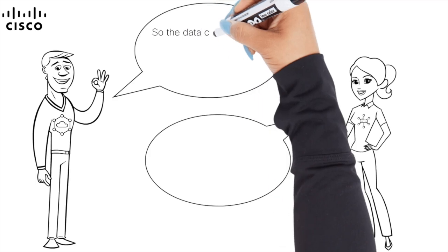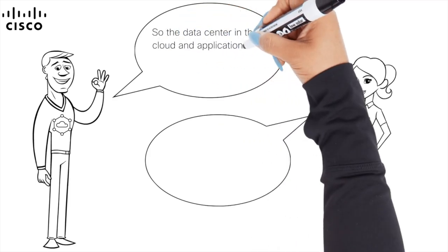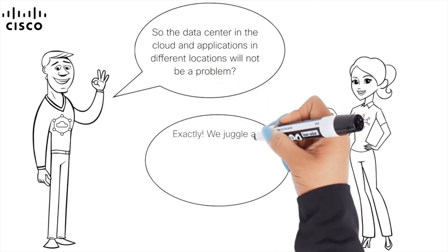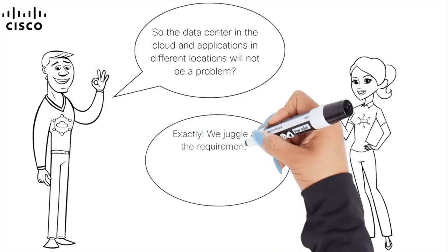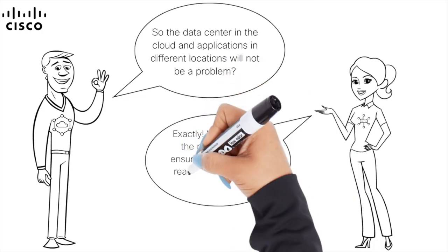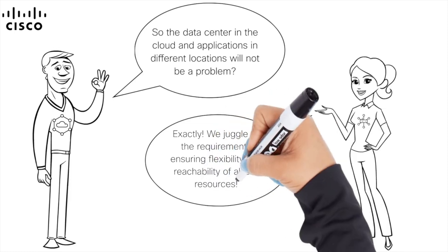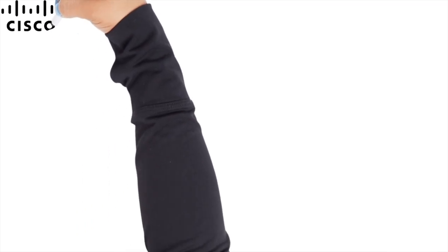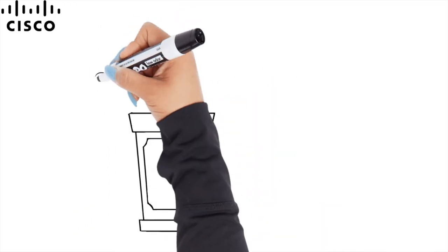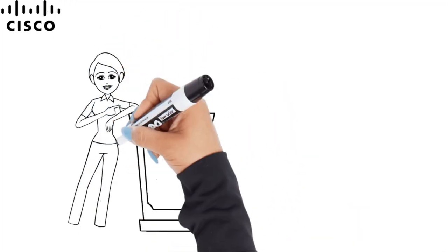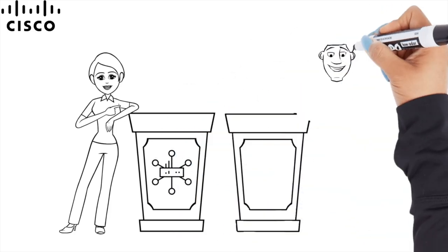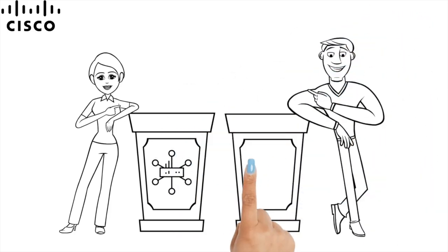So the data center in the cloud and the applications in different locations will not be a problem? Exactly! We juggle all the requirements ensuring flexibility and reachability of all our resources. Now you know that your network department and cloud department can collaborate with each other even closer, thanks to the integration of Catalyst SD1 with AWS Cloud1.